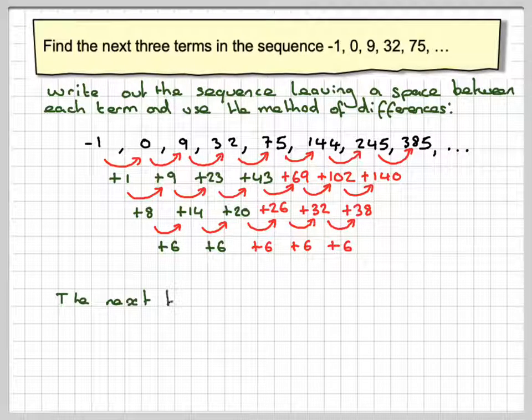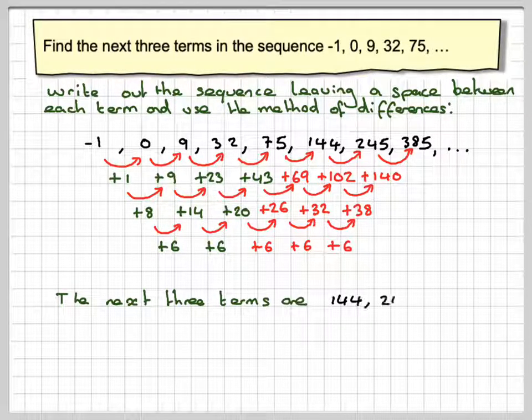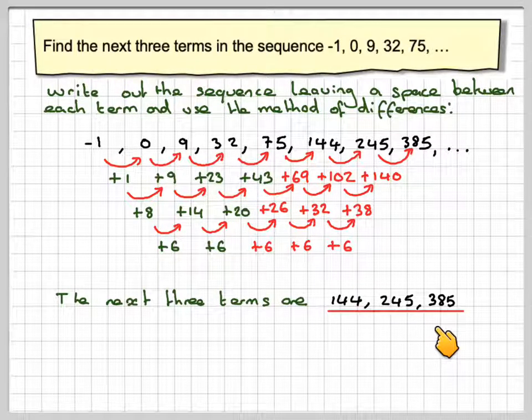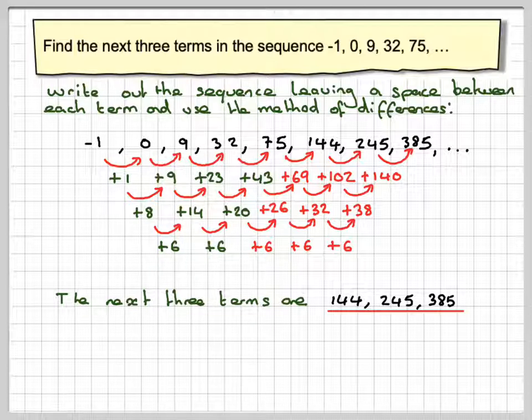So the next three terms are 144, 245 and 385. So if you set this out clearly, leaving a space, making sure you put each number in the gaps, you will be able to find the next three members using the method of differences. I hope you've understood. And I thank you very much for watching.